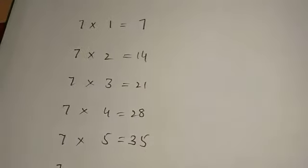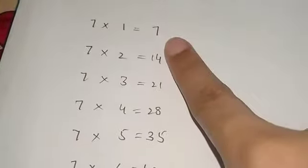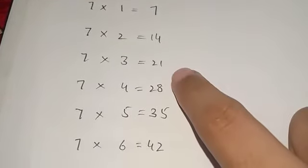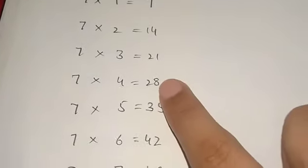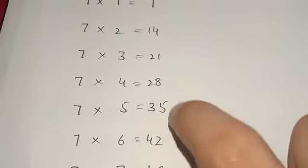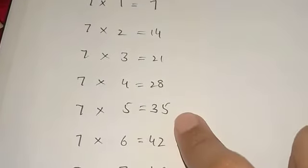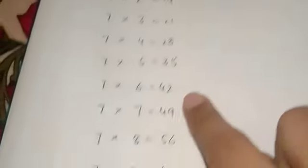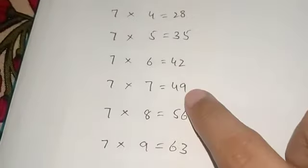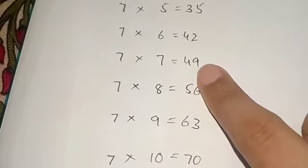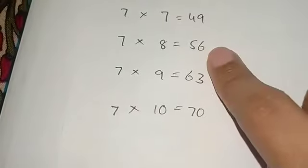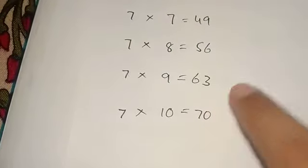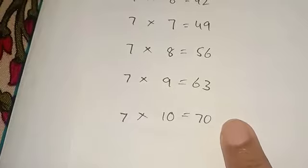Then we will learn it: sevens ones are seven, sevens twos are twenty-one, sevens fours are twenty-eight, sevens fives are thirty-five, sevens sixes are forty-two, sevens sevens are forty-nine, sevens eights are fifty-six, sevens nines are sixty-three, sevens tens are seventy.